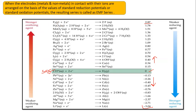Fluorine has the maximum reduction potential — it can reduce itself, which means it oxidizes others, making it the strongest oxidizing agent. As you move from bottom to top in the series, the oxidizing strength increases. Lithium has a reduction potential of −3.04, the least in the series. Since it is not getting reduced, it oxidizes itself, which means it reduces others — making it a strong reducing agent.